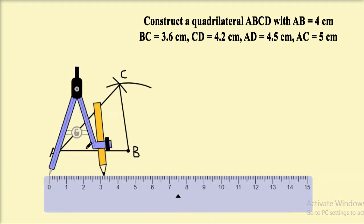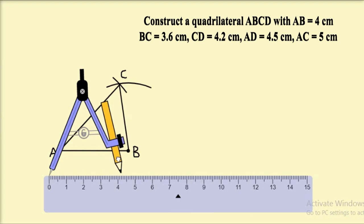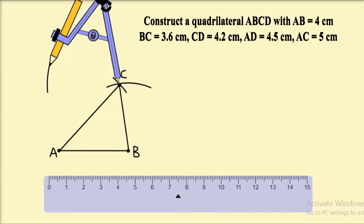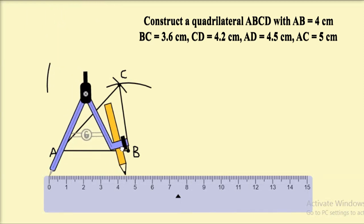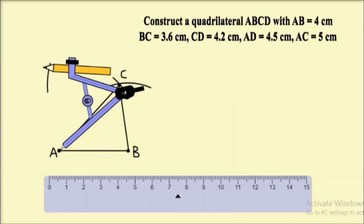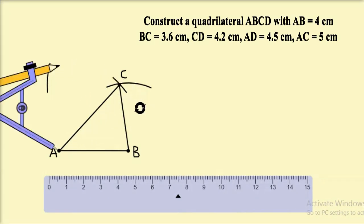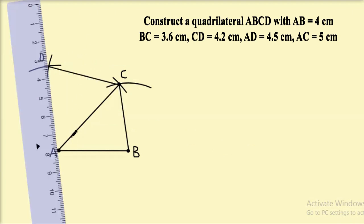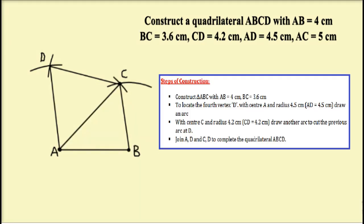Now we need to locate the fourth vertex D. Take CD equal to 4.2 cm with C as center and draw an arc. Then the final measurement AD is 4.5 cm, so with A as center and radius 4.5 cm, draw an arc intersecting the previous arc. Mark the point of intersection as D. Now join points C and D, and after that join points A and D. So here ABCD is the required quadrilateral.